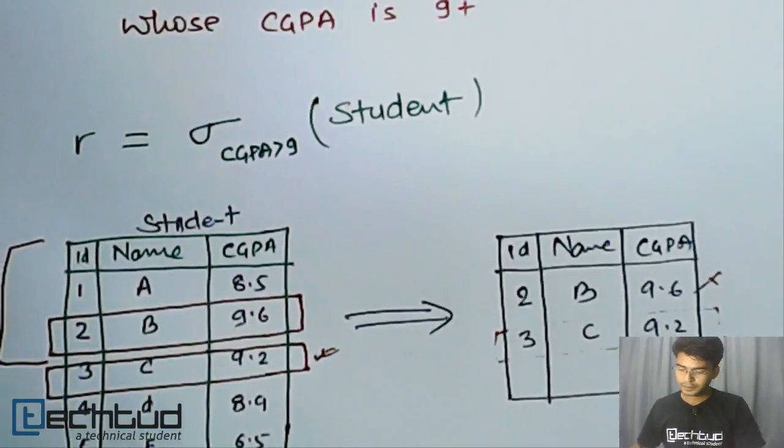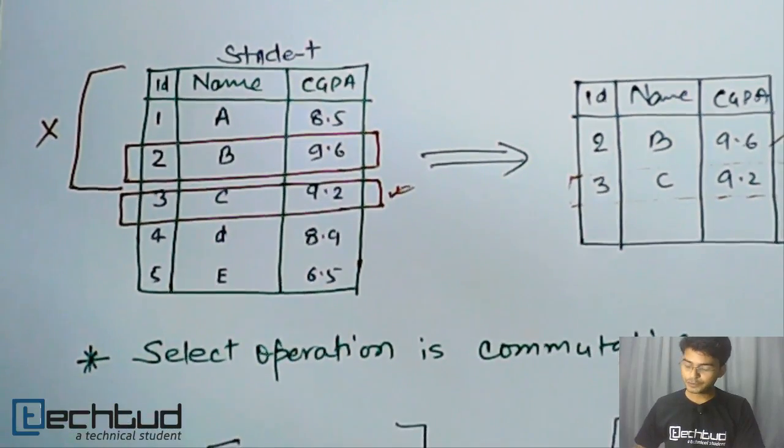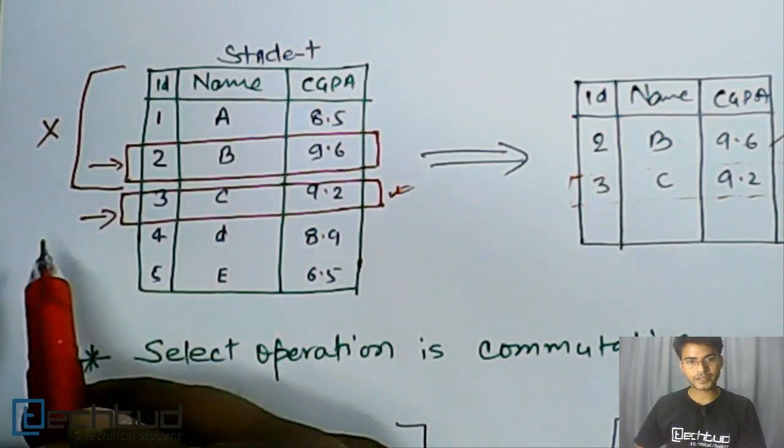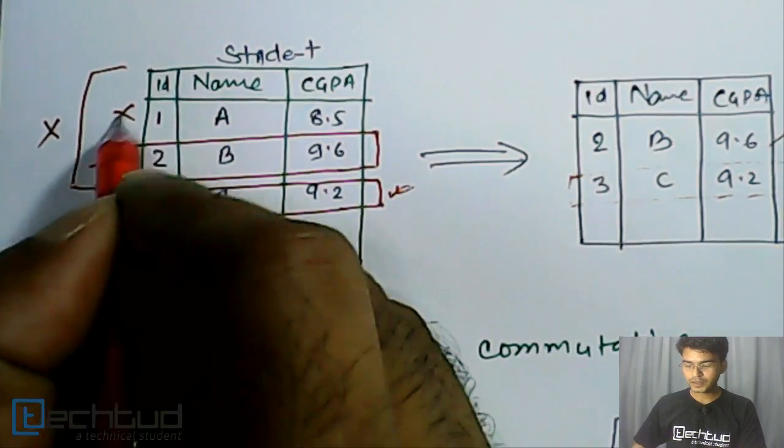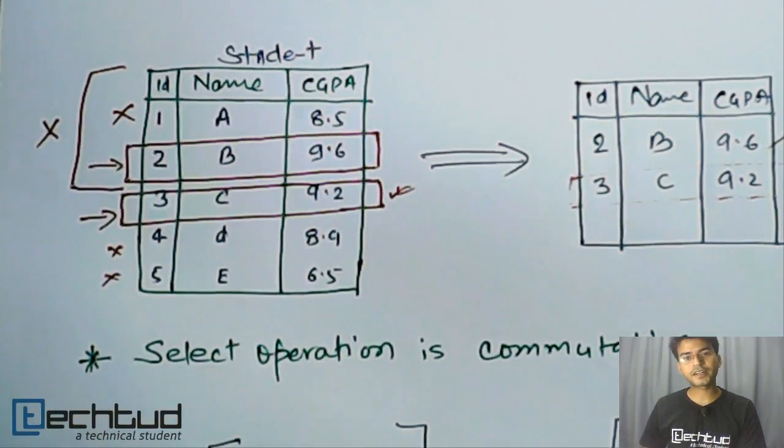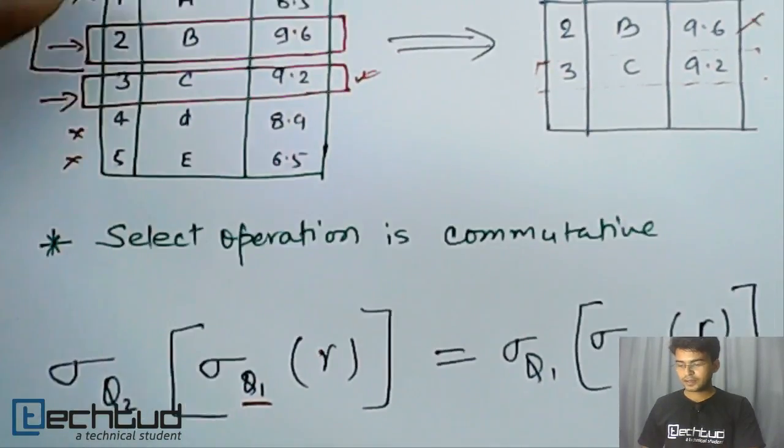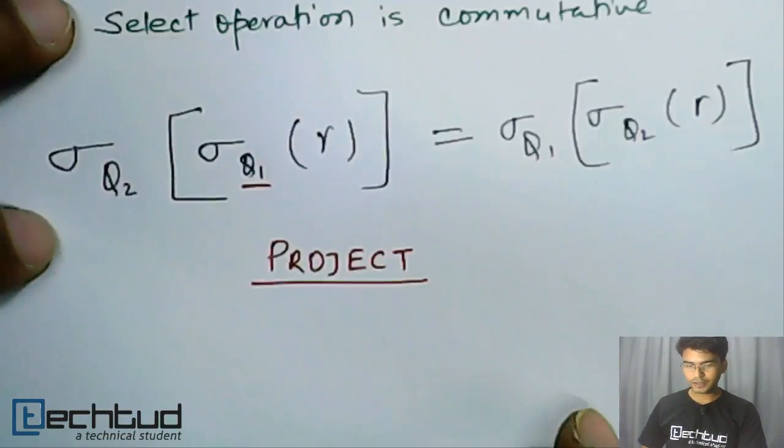Project is also a unary operation, and I forgot to mention select is also a unary operation. Both are unary operations which operate on a single relation. So what do we do in project? Let's understand it. Like in select, we just selected records of our interest and removed the other records which were not satisfying the condition.